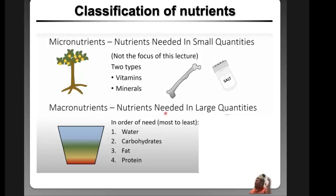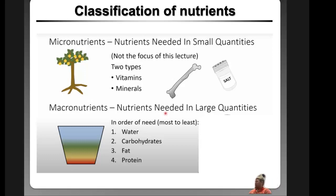There are different classifications of nutrients. Micronutrients are things we need in small quantities — your vitamins, minerals, and salts. Then you have your macronutrients, which you need large amounts of to keep your body going: water and the three main ones — carbs, proteins, and fats.